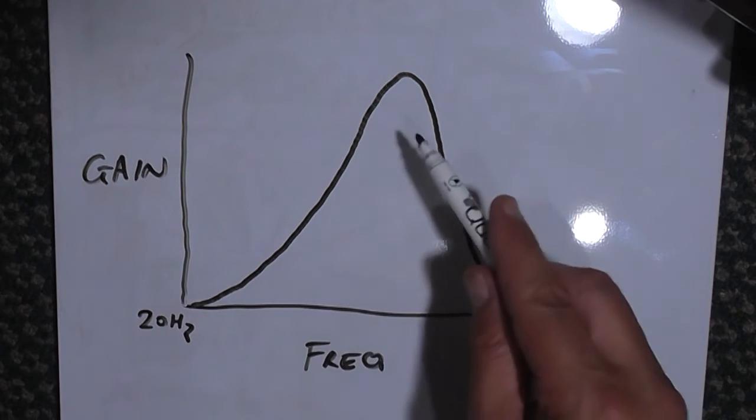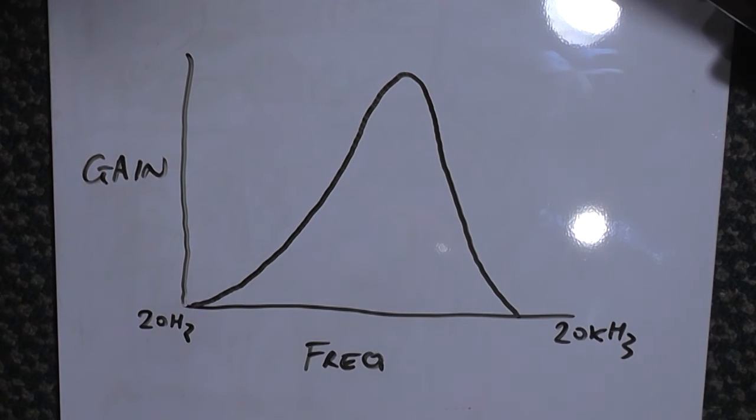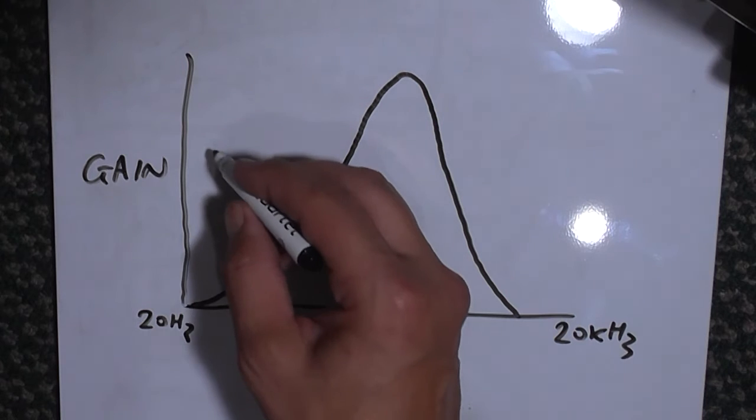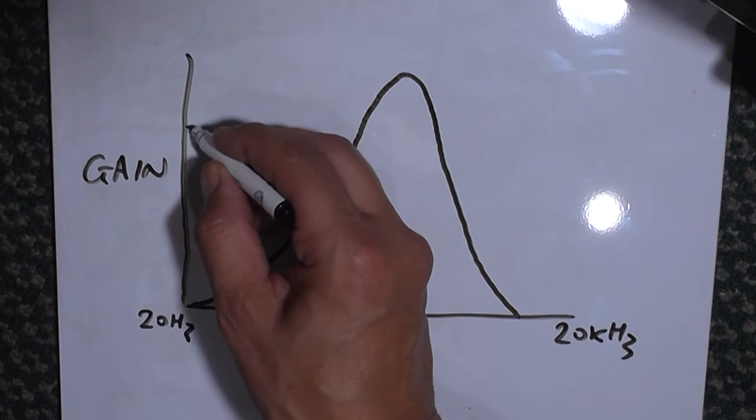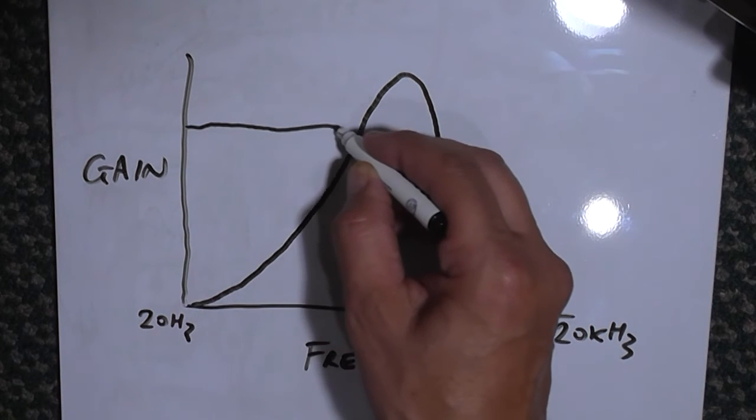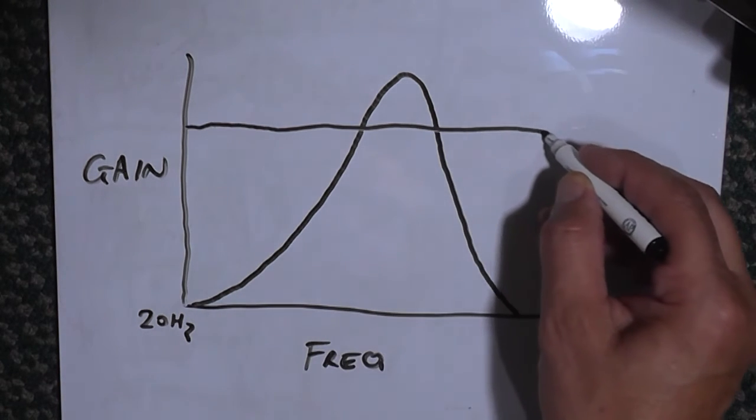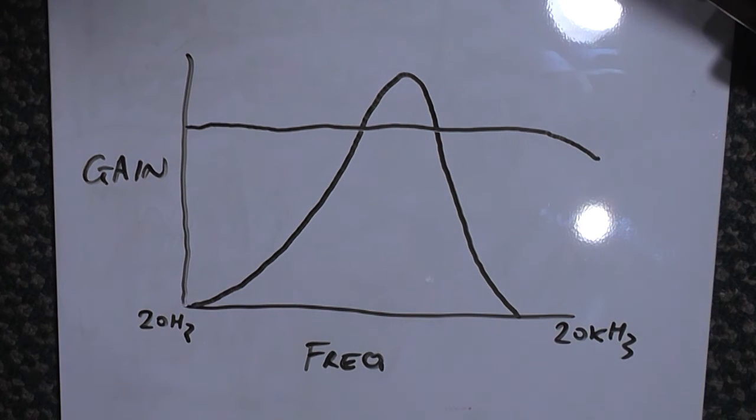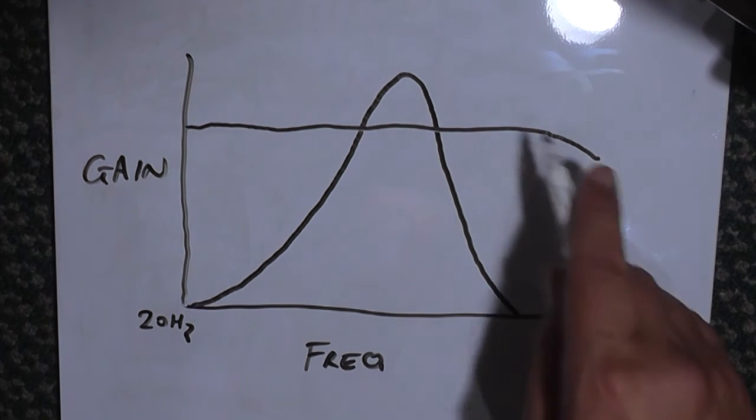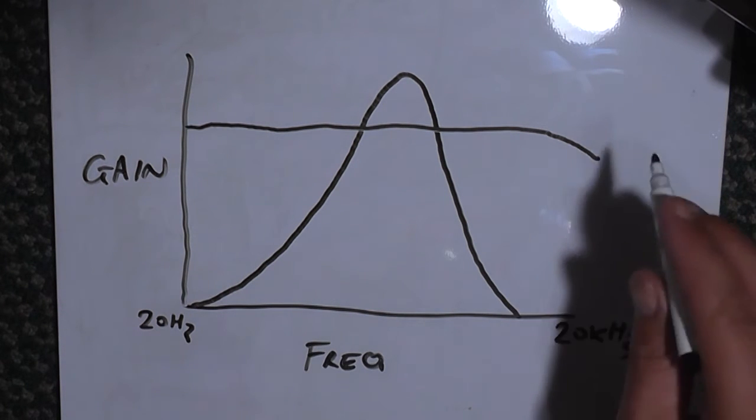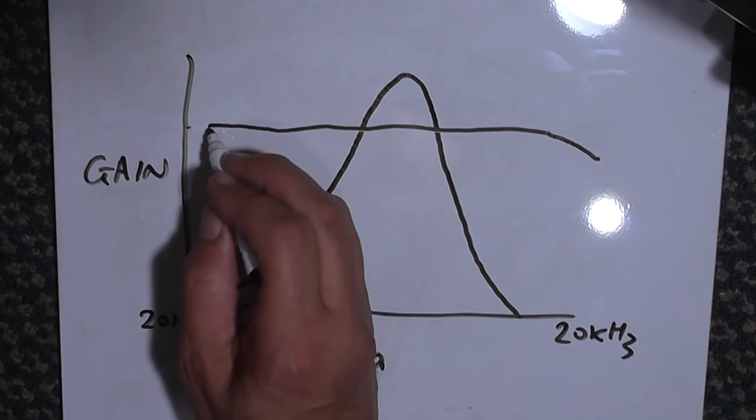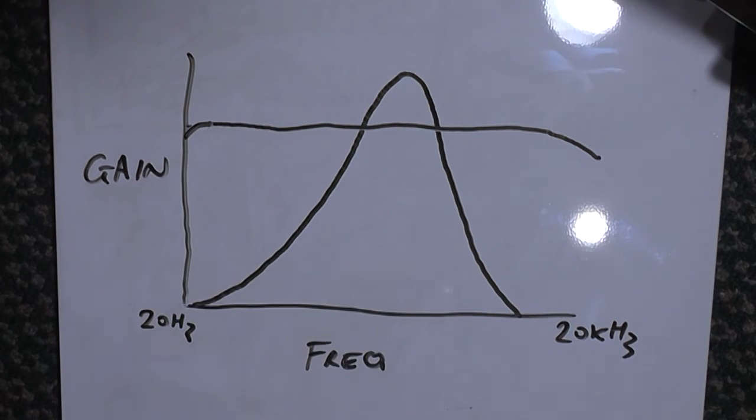Thanks Brian. Now this curve is without negative feedback. However, if we employ negative feedback, we almost get a flat response. Of course it's going to start rolling off at the high end, and it may or may not have a slow roll off at the bottom end as well - it depends on the amplifier.